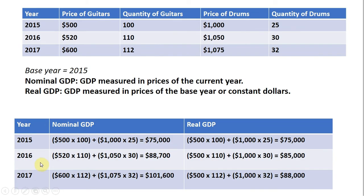In 2016, we do a similar thing. We take the prices in 2016 and multiply by the outputs of guitars and drums in 2016. So $520 times 110 guitars produced, plus $1,050 times 30 drums produced. That gives us $88,700 for nominal GDP in 2016.